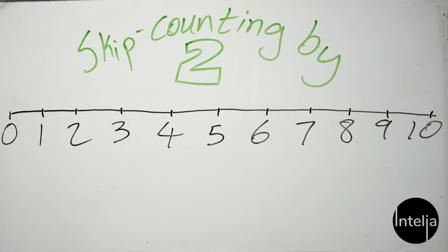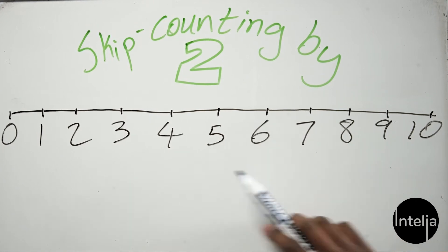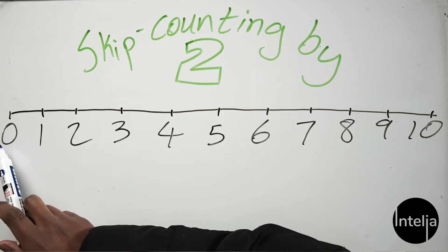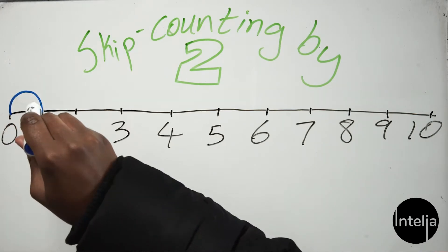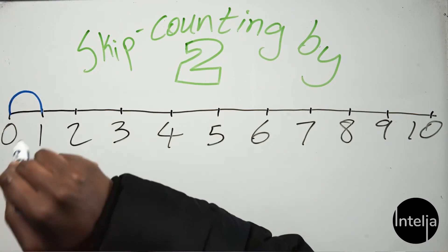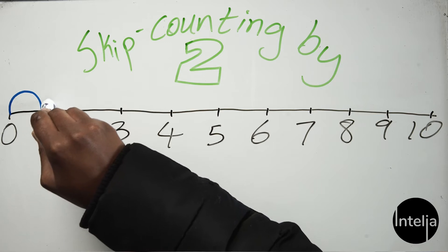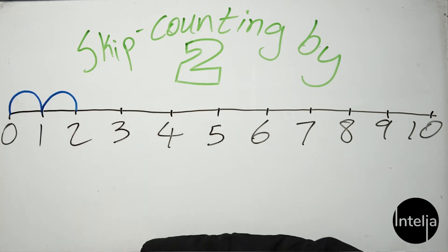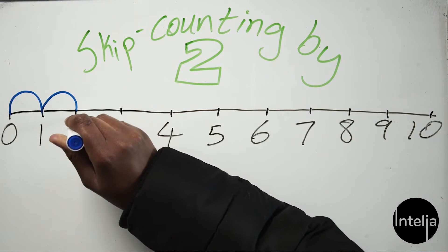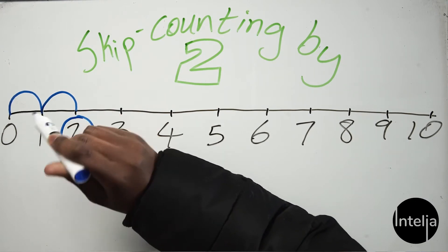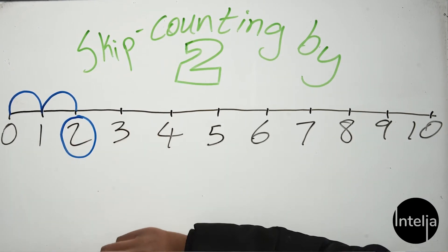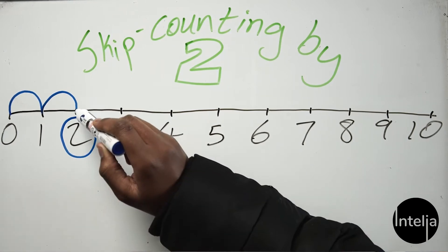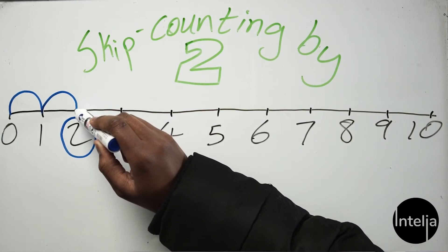Now, when you count in twos, what you do is you skip two numbers. So let's try it from zero. We start at zero, and we skip once — one — and then you skip a second time — two — and what do we land on? Two! Great.